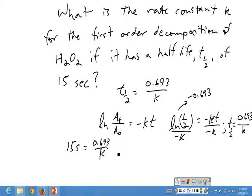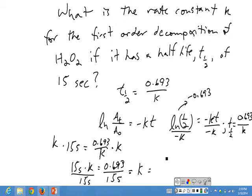If we manipulate it, let's multiply both sides by little k. We get now 15 seconds times k equals 0.693. We divide both sides by 15 seconds. We find that k is equal to 0.693 over 15.